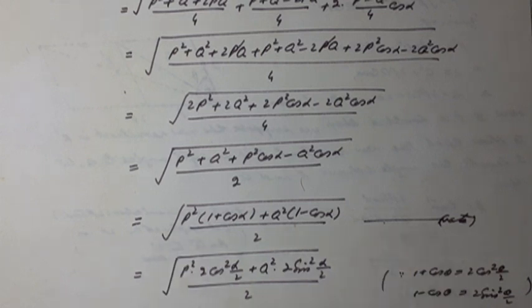Note it. We know that from trigonometry, 1 plus cos theta is equal to 2 cos squared theta over 2 and 1 minus cos theta is equal to 2 sin squared theta over 2. So here p squared 1 plus cos alpha over 2 plus q squared 1 minus cos alpha, 2 sin squared alpha over 2 under root.